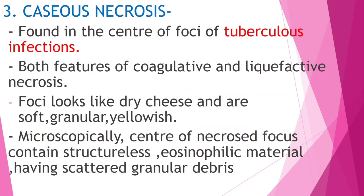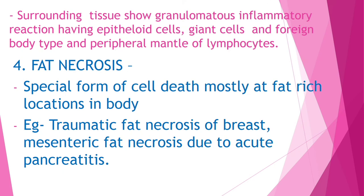Next is caseous necrosis. It is found in the center of foci of tuberculous infections. Both features of coagulative and liquefactive necrosis are present. The foci look like dry cheese — soft, granular, and yellowish in color. Microscopically, the center of the necrosed foci contains structureless eosinophilic material with scattered granular debris. The surrounding tissue shows granulomatous inflammatory reaction having epithelioid cells, giant cells of foreign body type, and a peripheral mantle of lymphocytes.